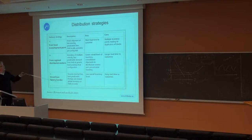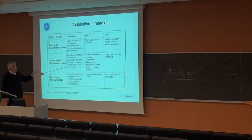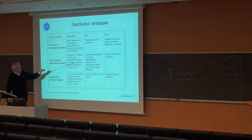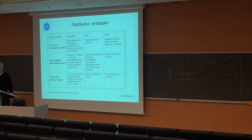When it says less predictable demand lines, that is fluctuations, volatility. Another topic here: inventory held at generic levels, awaiting final configuration. That means you can hold back and wait with the final labeling, the final assembly, in some cases, until the order is placed.